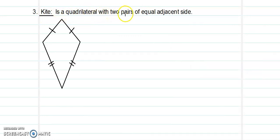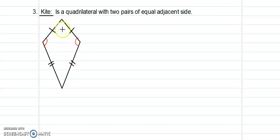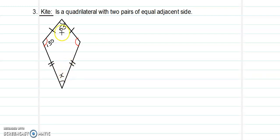Next we talk about the kite. A kite is a quadrilateral with two pairs of equal adjacent sides. That means these two sides are equal to each other, and these two sides are equal to each other. So in this kite, if we are asked to find x, given that one angle is 130 degrees and another is 65 degrees, we know that the sum of the angles in the quadrilateral must equal 360 degrees.